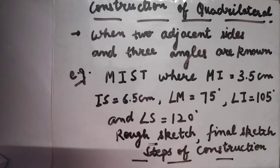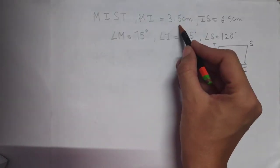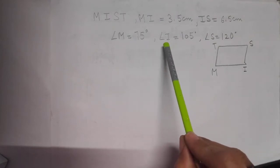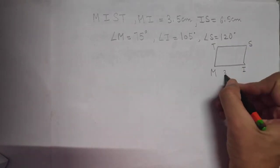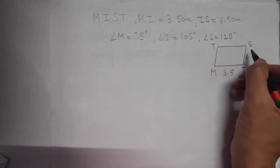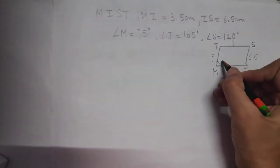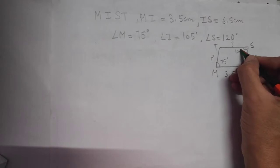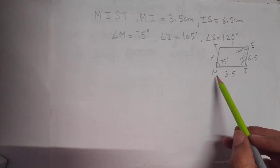Let us begin with the rough sketch. We need to construct quadrilateral MIST: MI = 3.5 cm, IS = 6.5 cm, angle M = 75°, angle I = 105°, and angle S = 120°. This is the rough sketch — MI = 3.5 cm, IS = 6.5 cm. Side ST is unknown, and the fourth side is also unknown. We can see that in this example we need to take MI as base, since both adjacent angles and the side measurement are known.